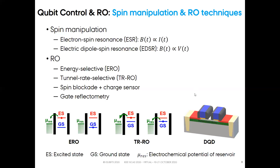In gate reflectometry, an inductor is connected to the readout gate of the double quantum dot and forms a resonator with the gate capacitance of the dot. Then, under proper biasing of the double quantum dot, the gate capacitance and thereby the reflection coefficient of the resonator depend on the spin state of the qubit.